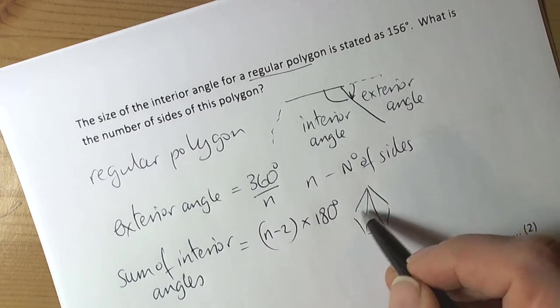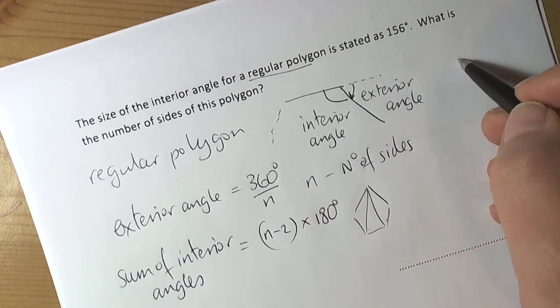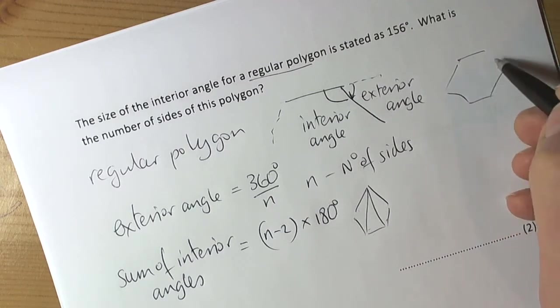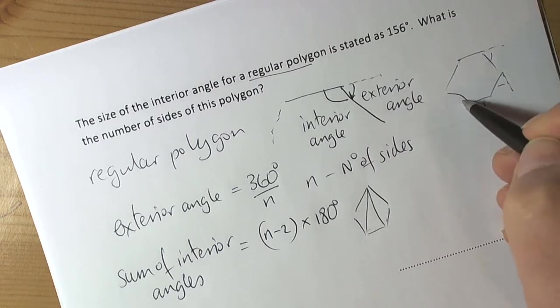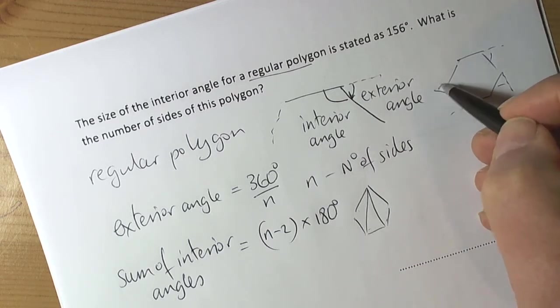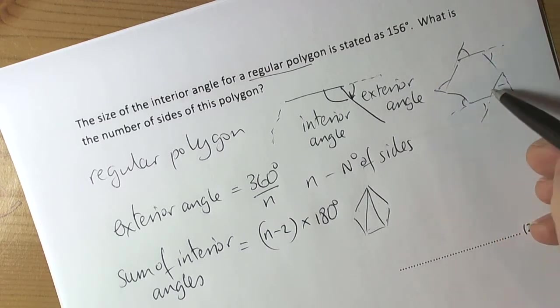Exterior angles all the way around the polygon—if I had a hexagon, the exterior angles are those there. There's six of them, and if I go around the polygon, then I'm turning a full 360 degrees.